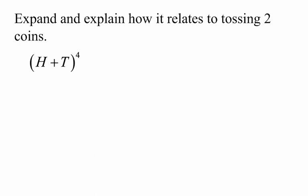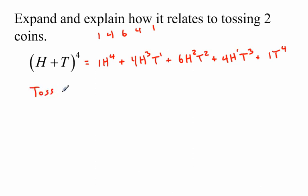In our last problem, what we're going to do is expand H plus T to the 4th and then make some connections about tossing coins. So let's start off with, we need row 4. I know it's just 1, 4, 6, 4, 1. So I've got 1H to the 4th, because H gets all its powers there. Then 4H goes down to 3, T to the 1st, plus 6H goes down to 2, T is up to 2, plus 4H to the 1st, T to the 3rd. And lastly, 1T to the 4th. So I've expanded it.